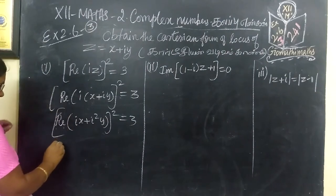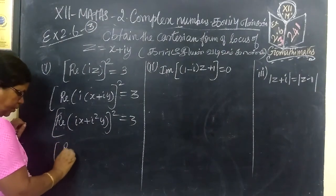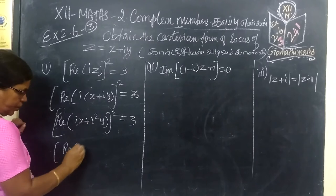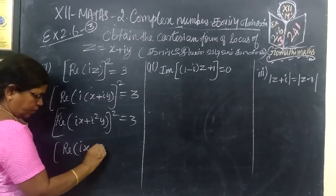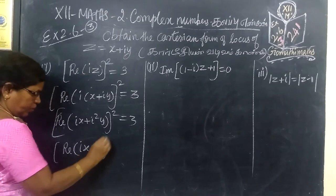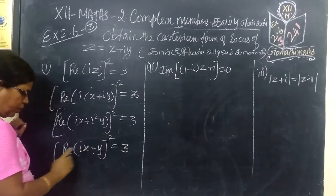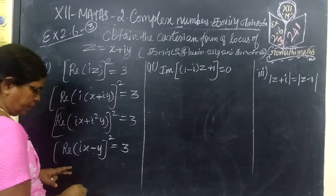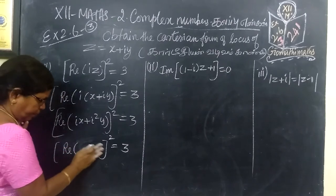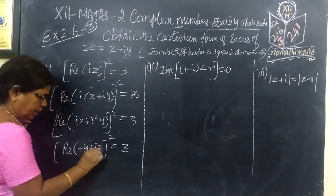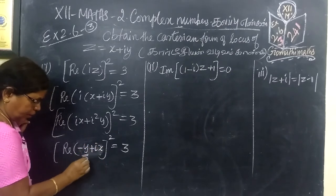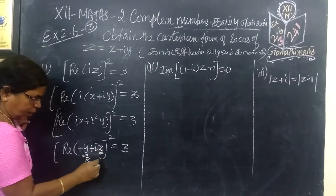Whole square equal to 3. So real part of i square minus 1, 1 equal to 1y, whole square equal to 3. What is the real part of this? Minus y plus ix. This is the real part and this is imaginary part.